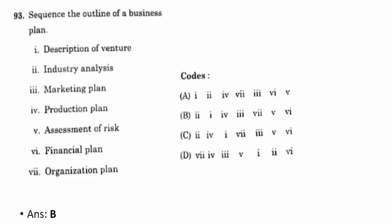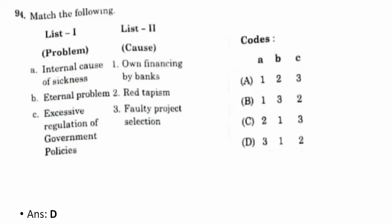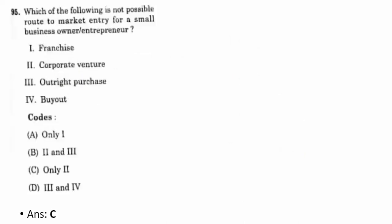Ninety-third question: sequence the outline of the business plan. The correct option is B — two, one, four, three, seven, five, six: industry analysis, description of venture, production plan, marketing plan, organizational plan, assessment of risk, and financial plan. Ninety-fourth question — match problems to causes. The correct option is D — three, one, two: faulty project selection is an internal cause of sickness; won't financing by banks is an internal problem; excessive government regulation is due to red tape-ism.